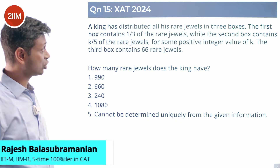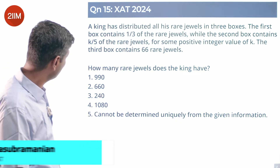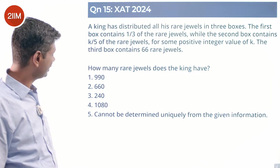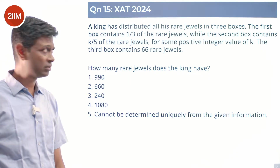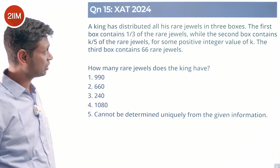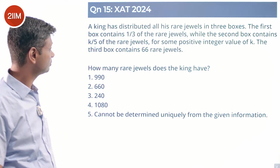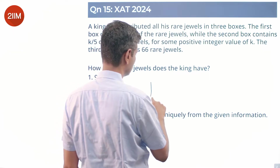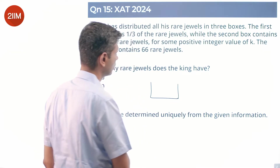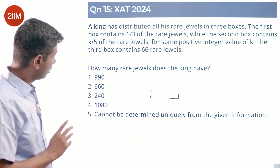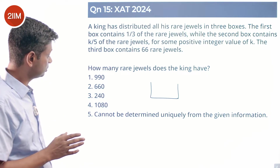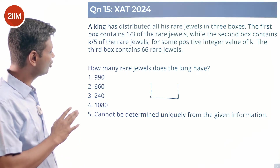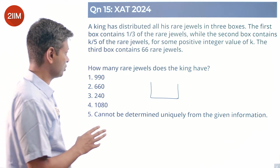A king has distributed all his rare jewels in three boxes. The first box contains one-third of the rare jewels, while the second box contains k by 5 of the rare jewels for some positive integer value of k. The third box contains 66 rare jewels — one-third of the rare jewels goes to box one.